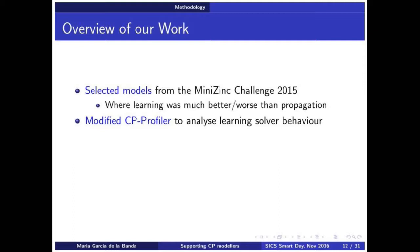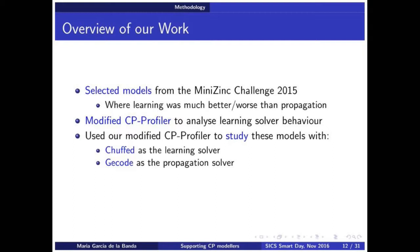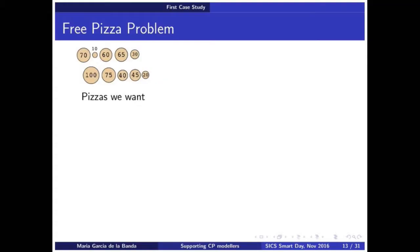Now, what we did, we wanted to understand the solvers. So what we did was go to the Minisync challenge and select several problems. The ones in which the learning solvers were either very good or very bad. We wanted to know when does it go well, when does it go badly. And then we modified our CP profiler, which is basically a tool to analyze the execution of programs. And we used it with two solvers. One with learning, chaff. One without learning, g-code, which is a really good solver. And then we studied them and we explored them. And I'm going to present the results of two case studies. We did many more, but those two are enough for explaining what we found.